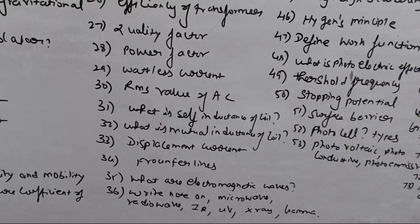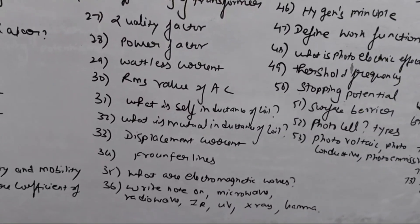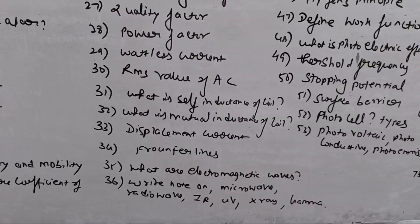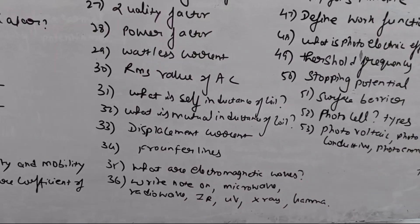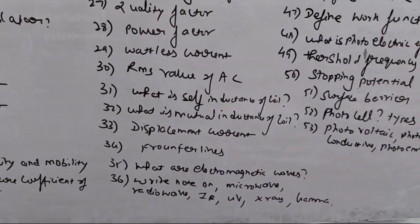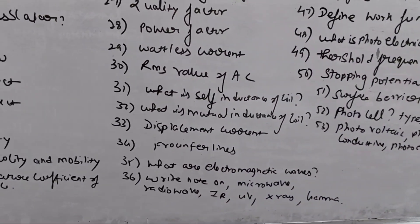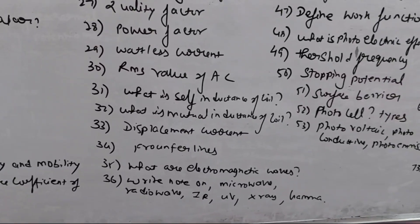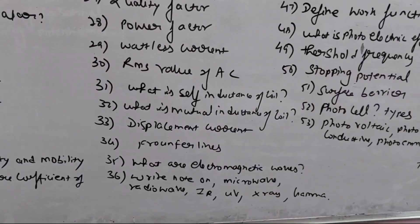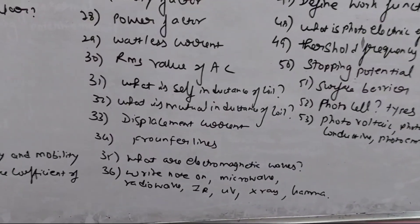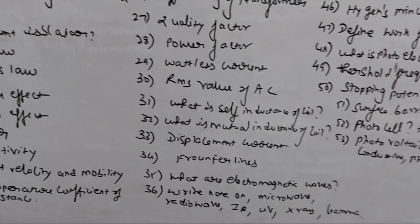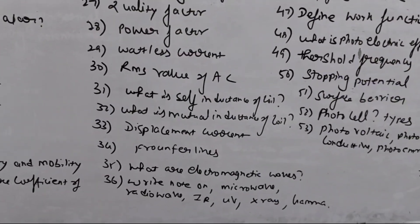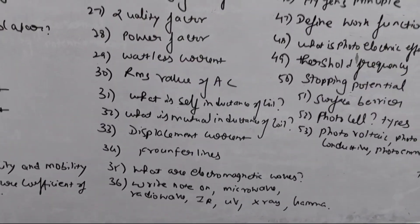5th lesson: Displacement current, Faraday's line, electromagnetic wave. Microwave, radio wave, IR, infrared, ultraviolet, X-ray, gamma. So if you want to write a note, the uses and properties are added according to frequency.